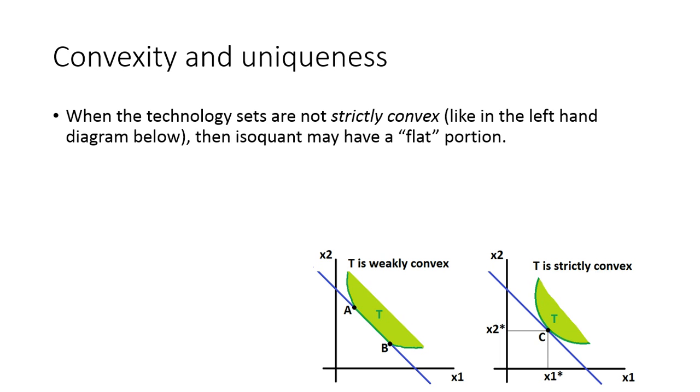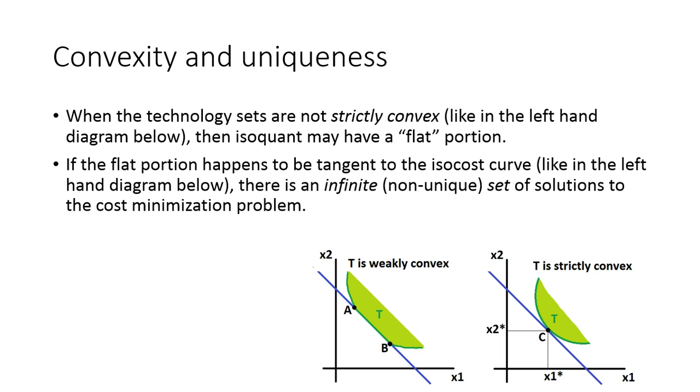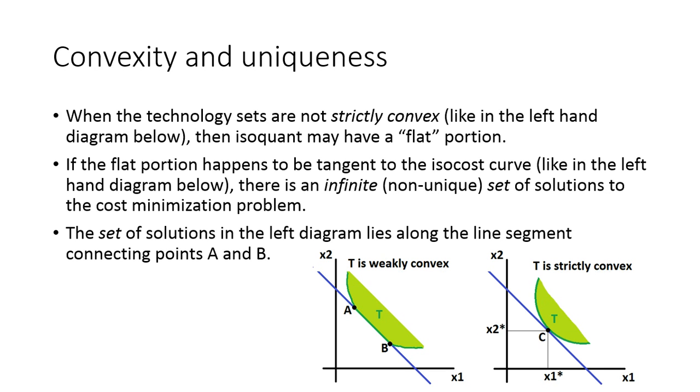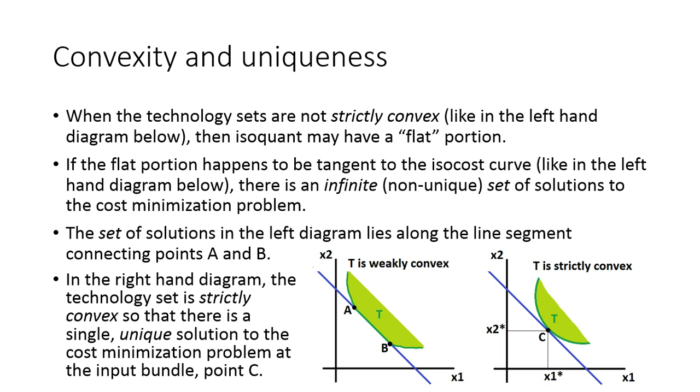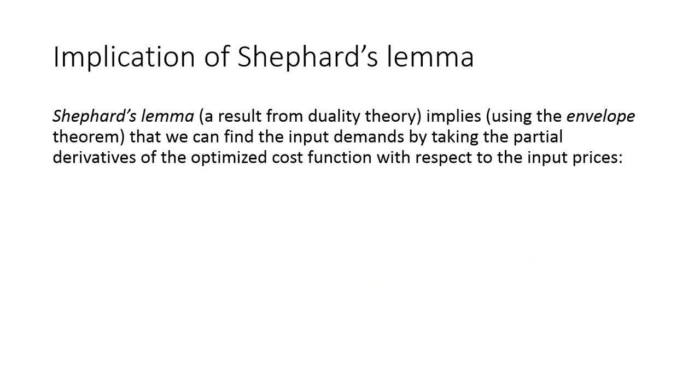So you'll notice if we're in the situation where we have a weakly convex technology set, and the flat portion happens to be tangent to this blue isocost curve, then any of these allocations between points A and B are going to wind up being optimal in terms of solving this cost-minimization problem. So I'm not going to wind up getting a unique solution like I would over in this right-hand diagram, where there is just a single unique point of tangency at this point C.